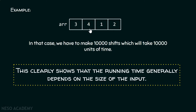Here, it depends on the size of the array. If the size of the array is three, it takes three units of time. If the size of the array is ten thousand, it will take ten thousand units of time. It totally depends on the size of the input what the running time will be. We are not considering machine time — only the size of the input.